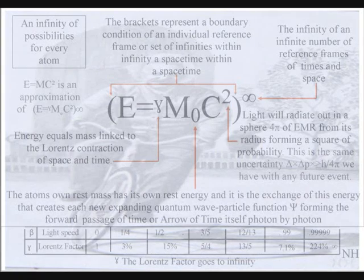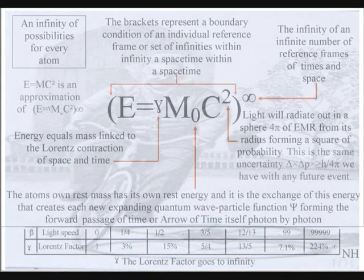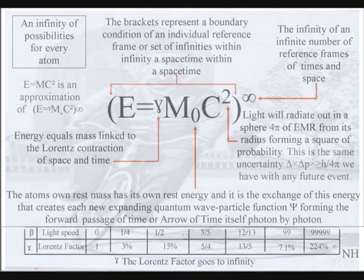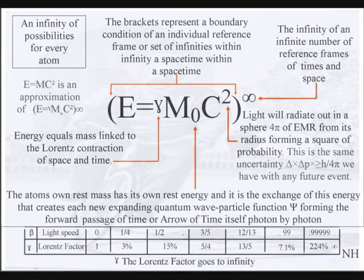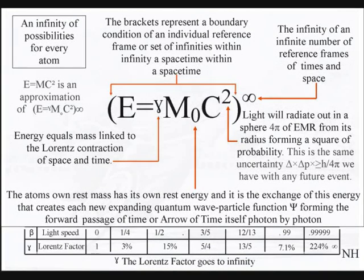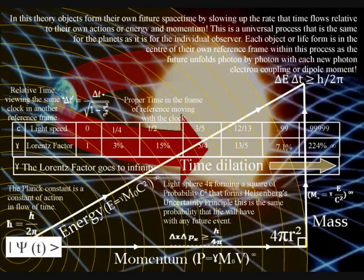All we have to do is place the Lorentz contraction of space and time between the energy and mass. Therefore, the greater the energy, the greater the contraction of space and the slower time will run. Mass will increase relative to this, and each reference frame can be seen as a vortex in space and time.